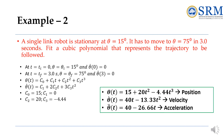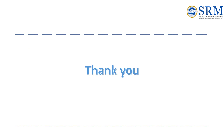Consider another example: a single-link robot is stationary at θ = 15° and has to move to θ = 75° in 3 seconds. Fit a cubic polynomial that represents the trajectory to be followed. Planning at the joint level, we find the coefficients c₀, c₁, c₂, c₃ and substitute into θ(t) to get the position. Differentiating θ(t) gives the velocity, and differentiating again gives the acceleration. This provides the complete trajectory path to be followed. Thank you.